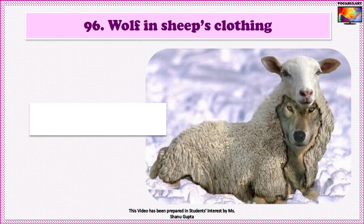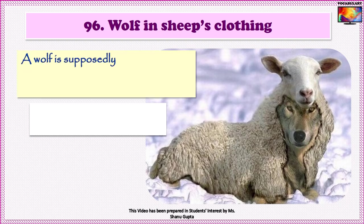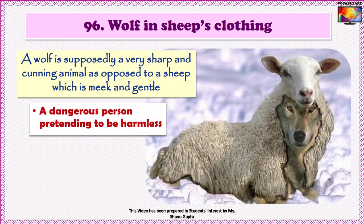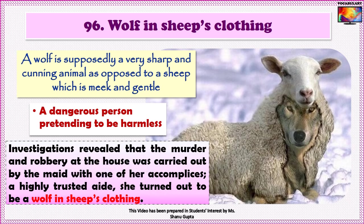Idiom No. 96 is 'Wolf in sheep's clothing.' A wolf is supposedly a very sharp and cunning animal, as opposed to a sheep which is meek and gentle. So a wolf in the garb of a sheep refers to a dangerous person who is pretending to be harmless. An example: 'Investigations revealed that the murder and robbery at the house was carried out by the maid with one of her accomplices. A highly trusted aide, she turned out to be a wolf in sheep's clothing.'